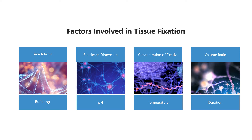Temperature: in general, an increase in temperature increases the rate of fixation but also increases the rate of autolysis and diffusion of cellular elements. Traditionally, 0 to 4 degrees Celsius has been considered the ideal temperature for fixation of specimens, though fixation is now routinely carried out at room temperature. Duration: primary fixation in buffered formalin for 2 to 8 hours, less than 24 hours. Prolonged fixation causes hardening and shrinkage of tissue.